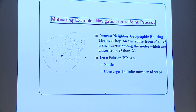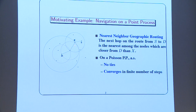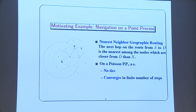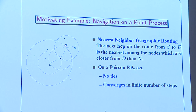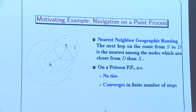So you look at the ball centered at D. You pick the closest point inside that ball, and you iterate this algorithm. You decrease the distance to D. There are no ties in the Poisson point process, so it converges in a finite number of steps to the destination. These are very simple algorithms to go somewhere on such a discrete structure.